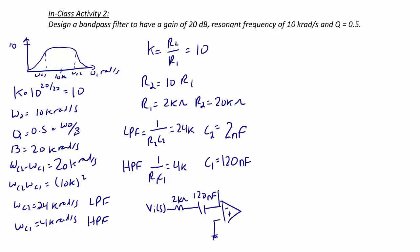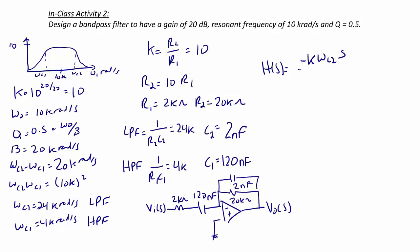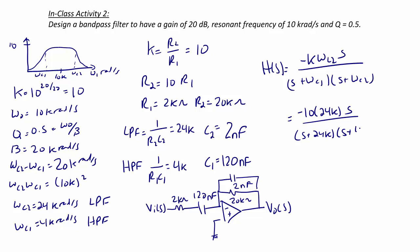The feedback is the active low-pass filter, with a feedback resistor of 20 kilohms and feedback capacitor of 2 nanofarads. The output is V0(s). The transfer function H(s) equals negative k·ωC2·s over (s + ωC1)(s + ωC2), or negative 10 × 24k × s over (s + 24k)(s + 4k).